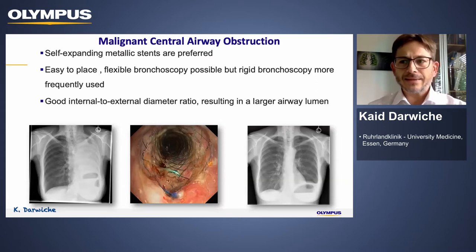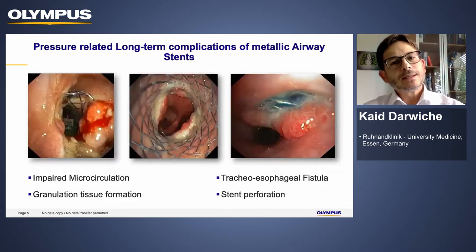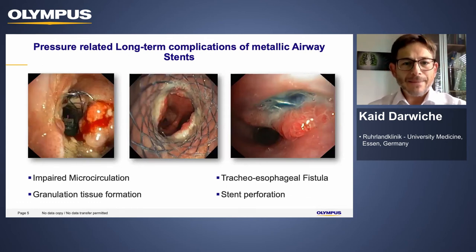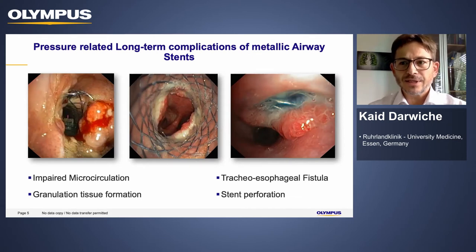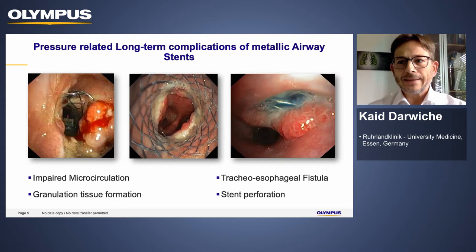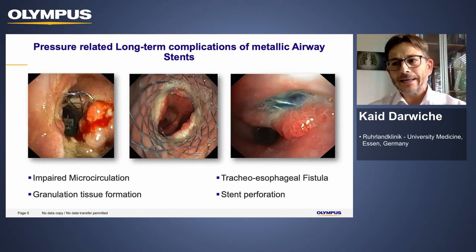Usually the stent applicator is advanced over a guide wire until it is located in the middle of the stenosis. Self-expanding metallic stents apply pressure to the airway wall, impairing microcirculation, and on the long term, complications are seen very frequently. Pressure-related complications include granulation tissue formation at the stent edges, and in case of fistulas, perforation and enlargement of the fistula can happen.